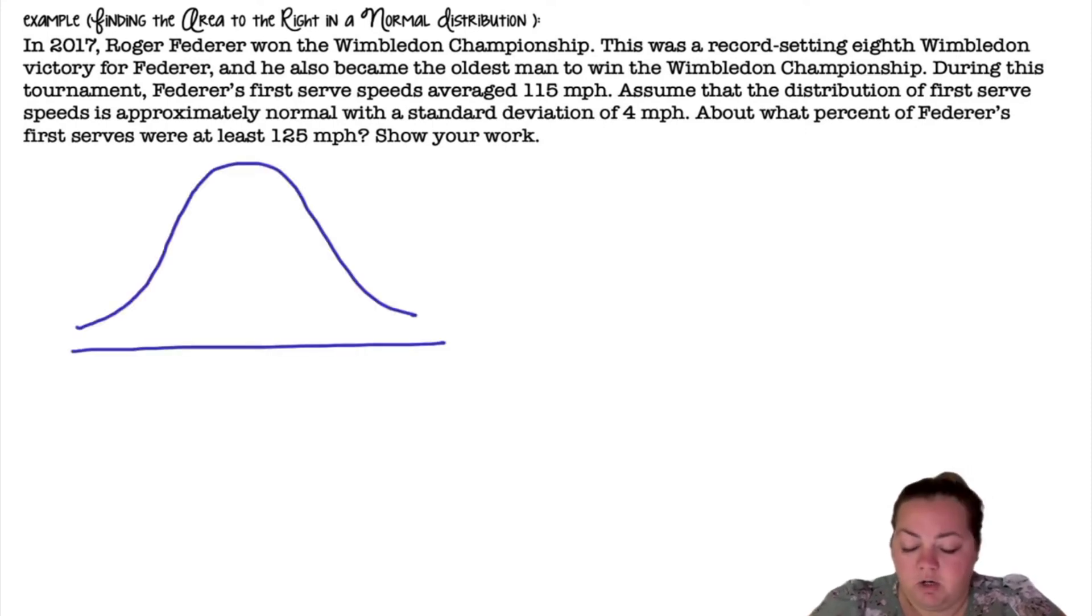I'm going to draw my normal distribution. It has a mean of 115, a standard deviation of 4. We are going to 125, so that's above, more than two standard deviations above, and I want at least that. So that value or more.